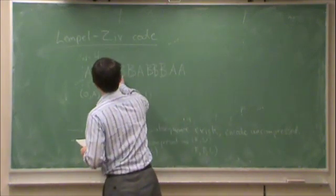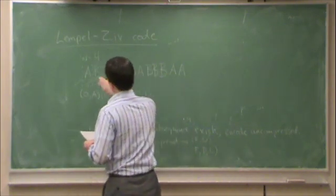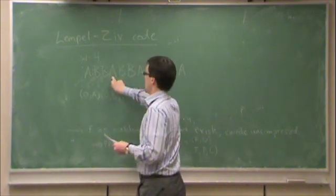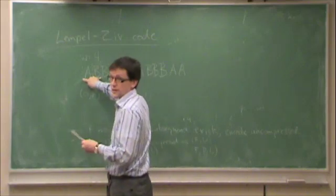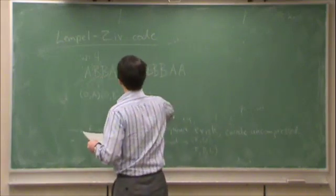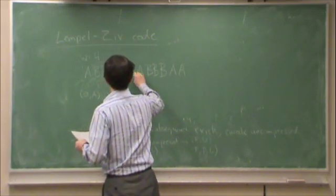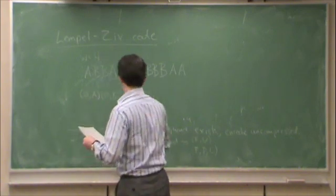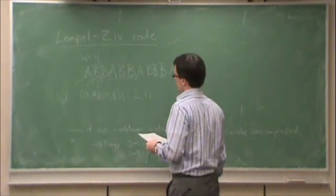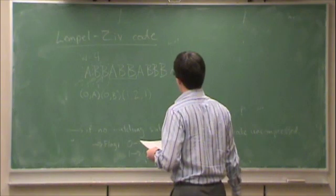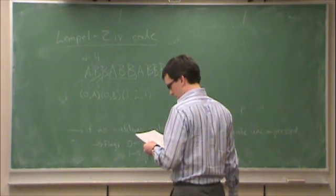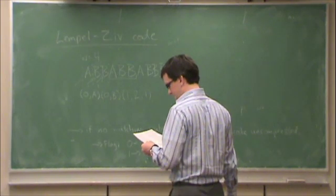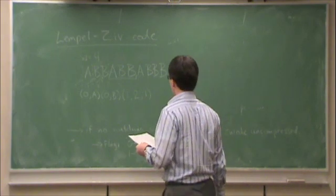Now I have, my history is ABB. I have an A, which I can find here. I have an AB, which I can find here. I have an ABB, which I can find here. So I can compress that with 1, 1, 3.